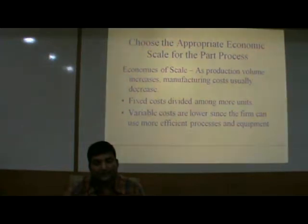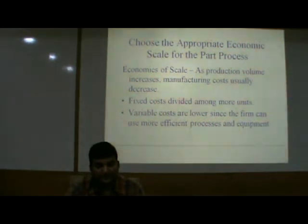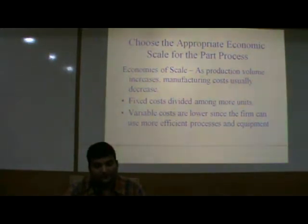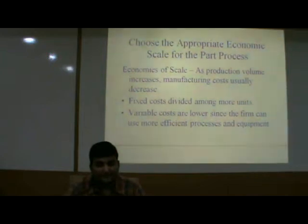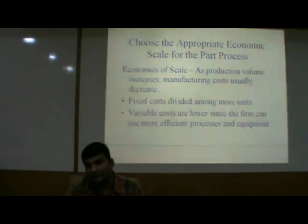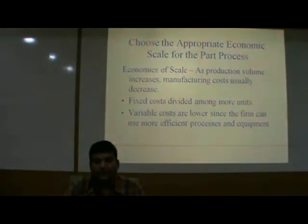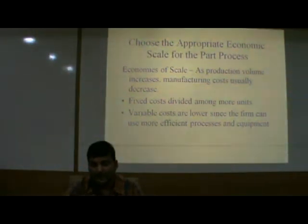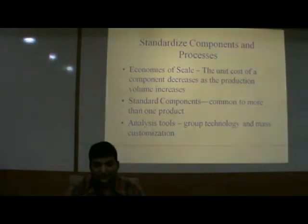Choose the appropriate economic scale for the part process — economies of scale. As production volume increases, manufacturing cost usually decreases. If we work on mass production, our manufacturing cost will decrease. Fixed costs are divided among more units, such as labor and material costs. Variable costs are lower since the firm can use more efficient processes and equipment. The unit cost of a component decreases as the production volume increases.